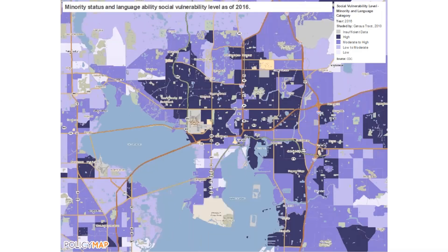The next example is minority status and language ability social vulnerability level. Darker purple areas indicate high vulnerability. It includes populations that identify as a race or ethnicity other than non-Hispanic white, and populations over age five that speak English less than well. This measure can identify areas needing targeted public outreach, information campaigns, or interpretation services.